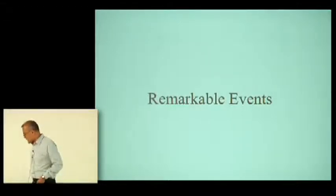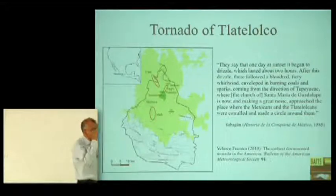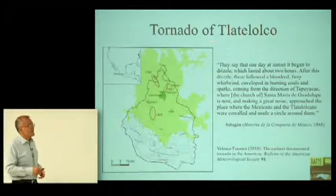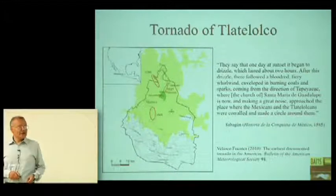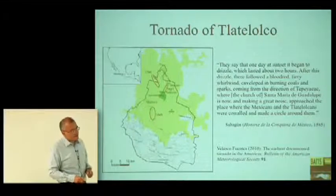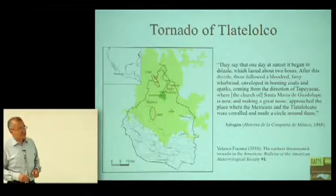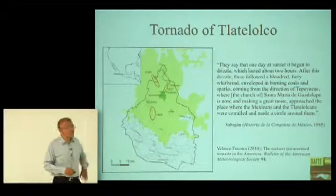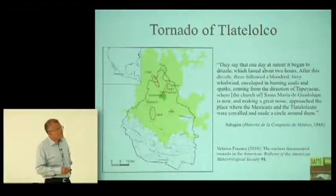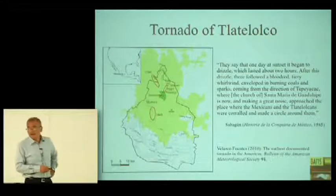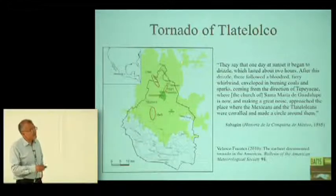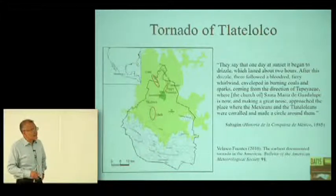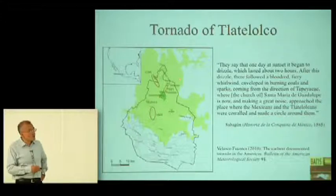Before giving you the statistics, let me mention a few remarkable events. The most remarkable is the tornado of Tlatelolco, because it is the earliest documented tornado in the whole continent. I wrote the paper, it got published and was featured on the cover of the journal. This event was in 1521: the city at that time was the dark green area and the rest was a lake; the city now is the light green area, and the political limit of Mexico City is this black line.